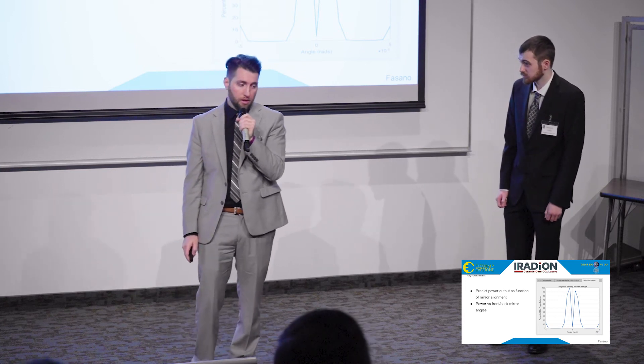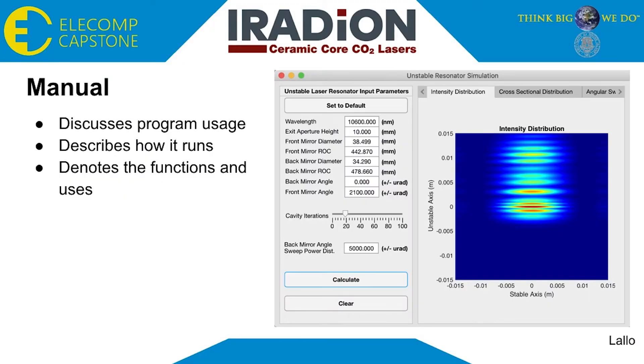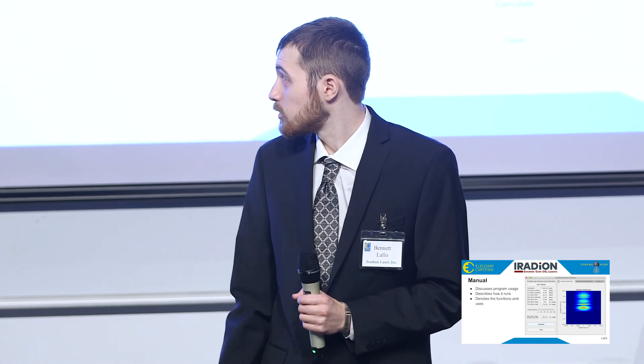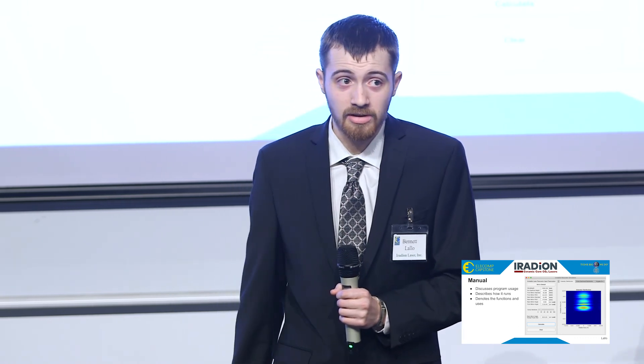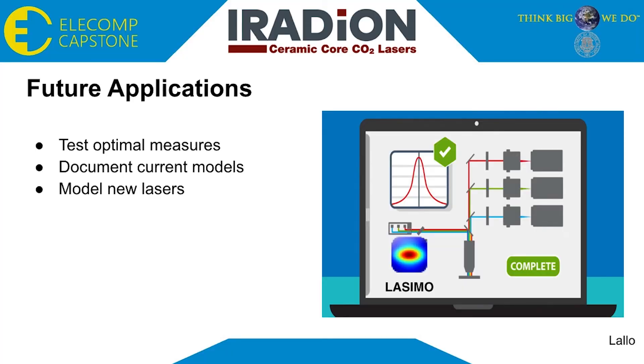With the GUI completed, the last step in completing the project was to provide the accompanying manual to allow Iradion staff to understand how the program is supposed to be used. The manual discusses how the general program is supposed to be used, along with the many parameters and what they do, along with how the program itself runs after a calculation has begun. It also denotes the various functions within the program and their uses in the event that Iradion wants to tweak or improve upon this model in the future. Overall, this model will allow Iradion to test for the most optimal measures for their current laser models and allow them to document existing features they've been looking for, such as the best measures for their mirrors in order to not lose a ton of power.